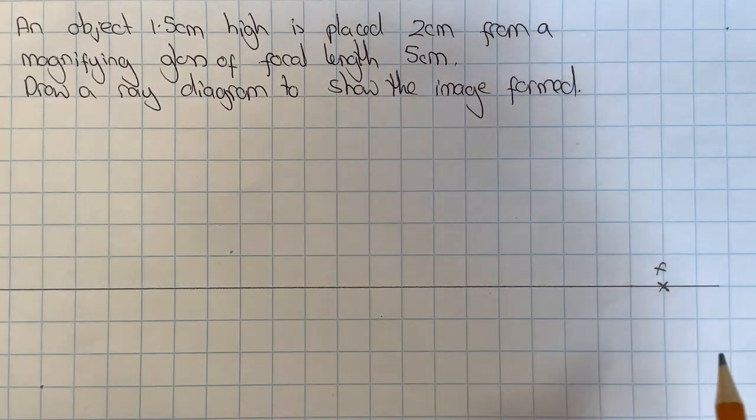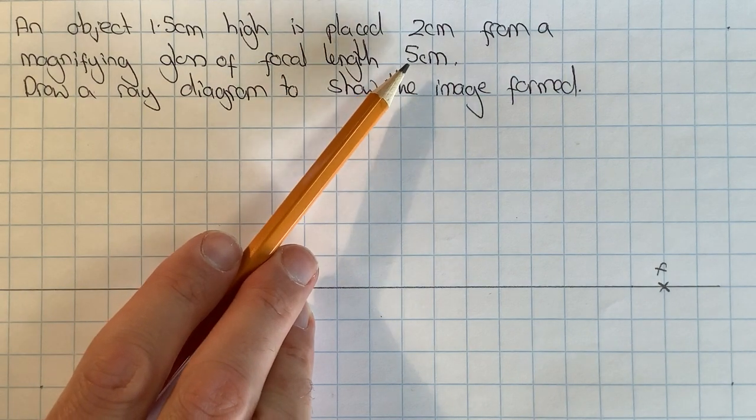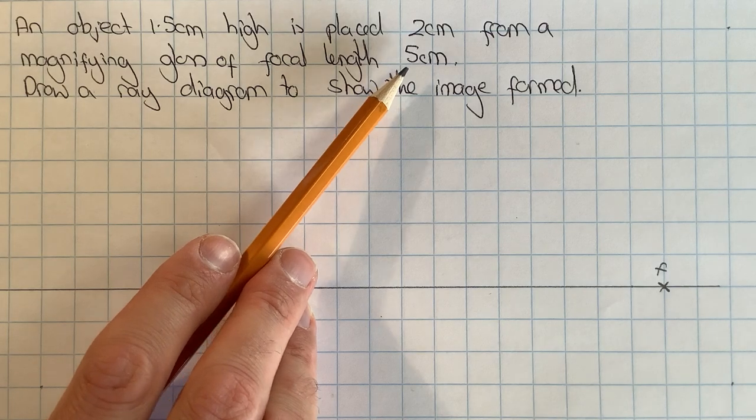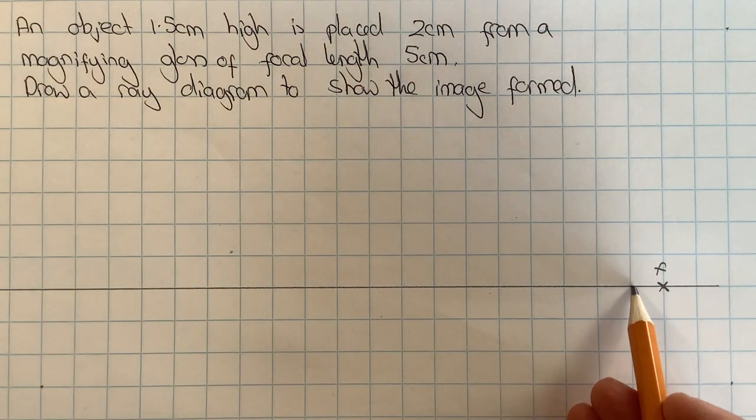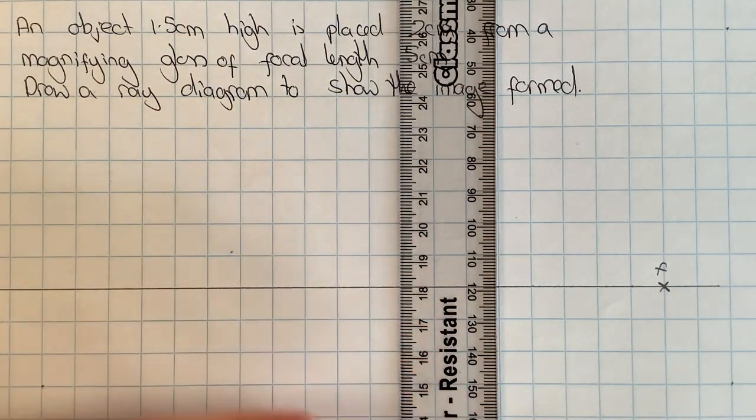I'm going to mark that as the focus with an F. It's telling me that the focus is five centimeters away from the lens, so I'm going to count one, two, three, four, five back.